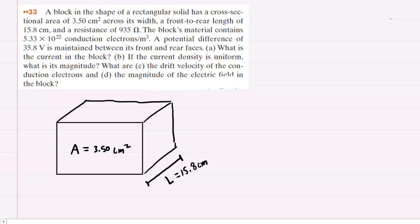In part A, we are asked to determine the current in the block. We know from a previous chapter that the current flowing through the block would equal the potential difference applied across the block divided by the resistance of the block. This is basically Ohm's law.